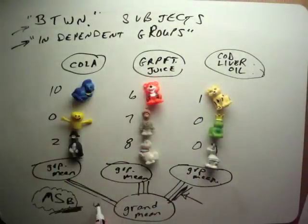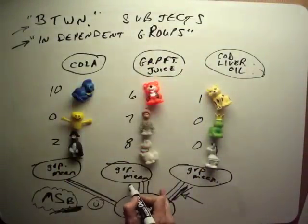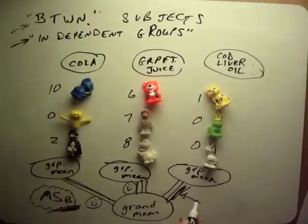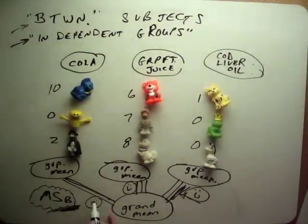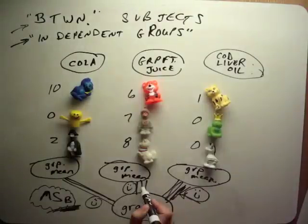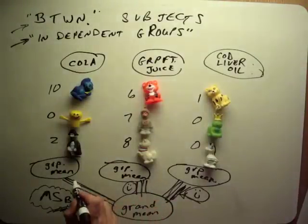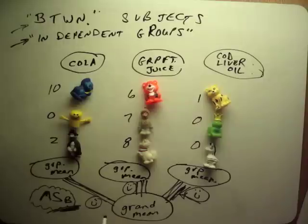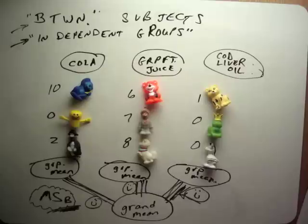We want these distances to be big — a smiley face here because big distances are good. If our treatment is very effective, the distances will be big. If our treatment is wimpy, there will still be some distances, but they'll be small — just on the magnitude of what chance creates in terms of differences between groups.